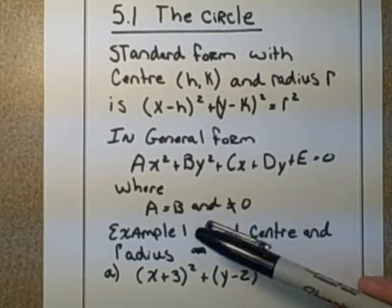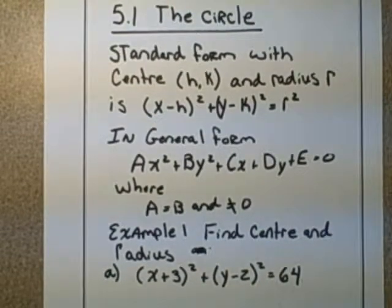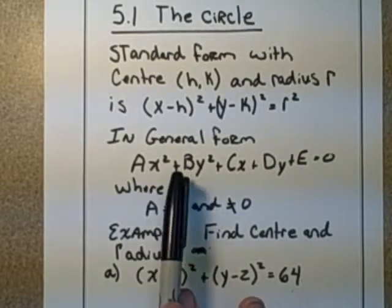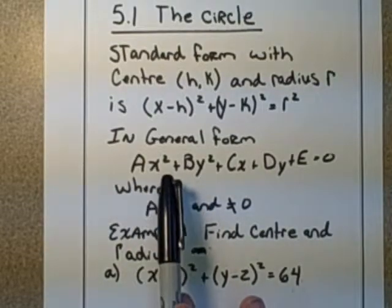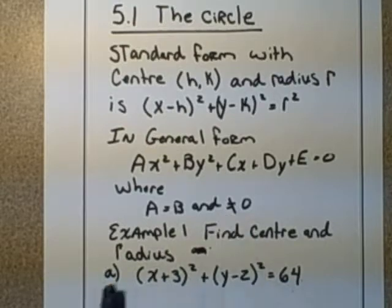The general form: Ax² + By² + Cx + Dy + E = 0, and A and B always are equal numbers to have a circle, but they can't be equal to 0.